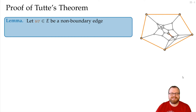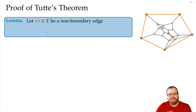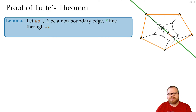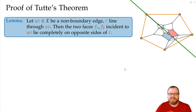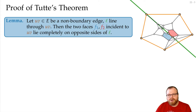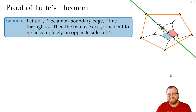We're almost ready to prove Tutte's theorem; we need just one more lemma. Pick any edge that is not an outer boundary edge. We take the line through this edge. In the unique planar embedding there are two faces, and these faces lie completely on opposite sides — every vertex except U and V of the blue face lies on one side of L, and every vertex except U and V of the red face lies on the other side. This is a really strong lemma and the proof almost immediately follows from it.